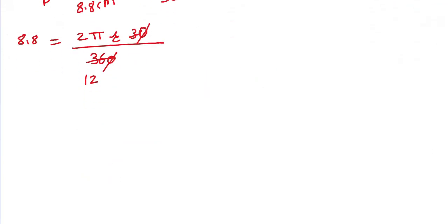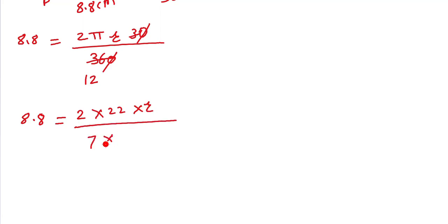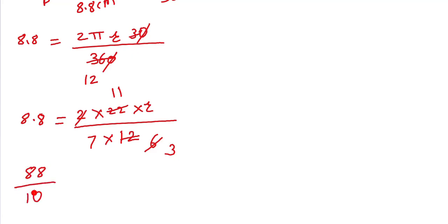We write pi as 22/7: 8.8 = 2 × (22/7) × r × (30/360). Simplifying, 30/360 = 1/12. Now from 8.8, we can write 88/10. So 88/10 = (22/7) × r × (1/6), which gives us r divided by 7 × 3 — 11 from 8.8. So 88 divided by 10 equals 11 × r / (7 × 3).